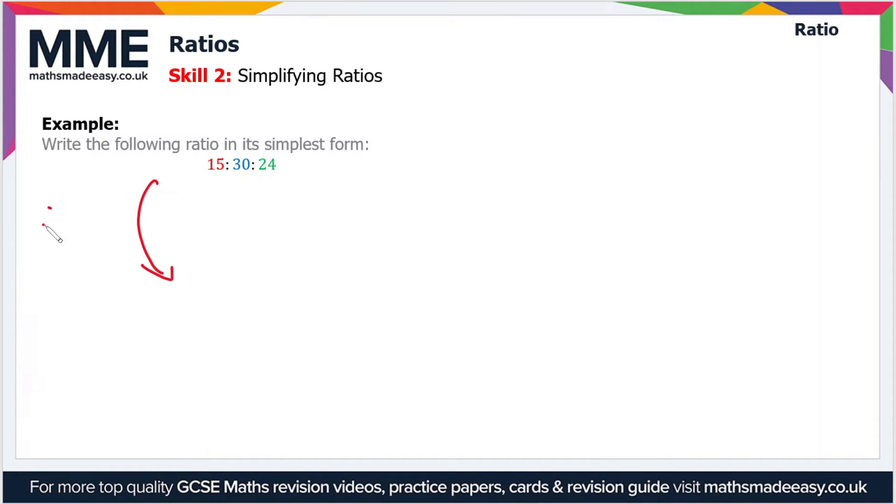If we divide this whole ratio by three, we should be left with our ratio in its simplest form, which gives us 5 to 10 to 8. We can't simplify this any further because there are no common factors of 5, 10 and 8, so this ratio is now in its simplest form.